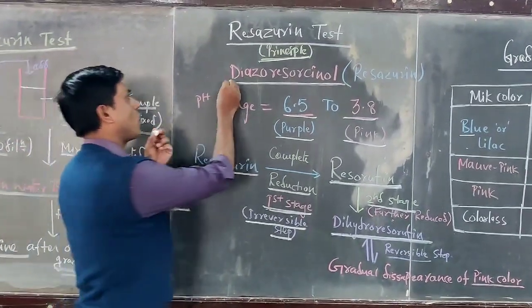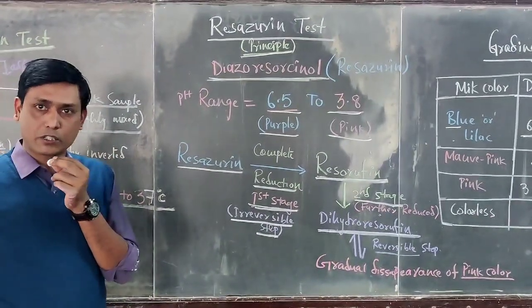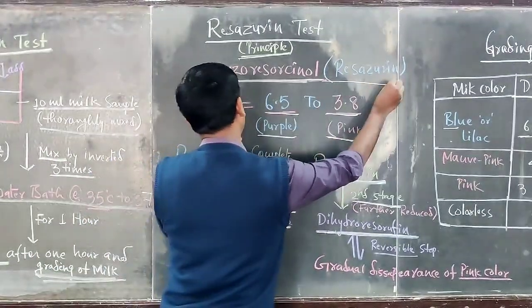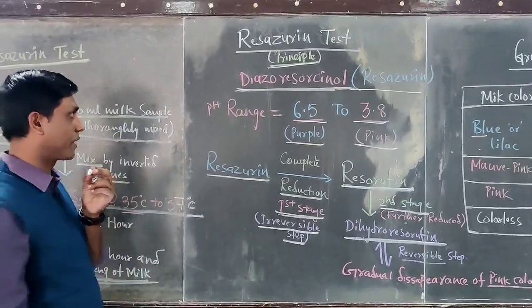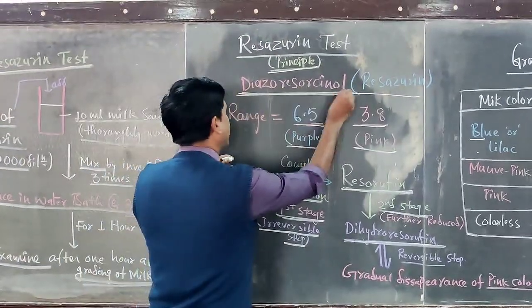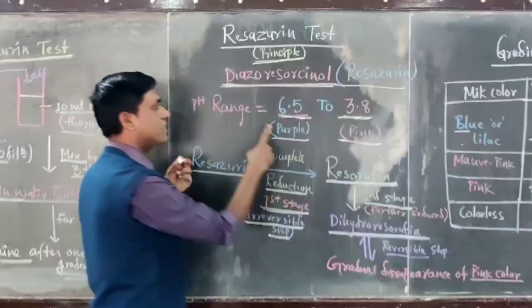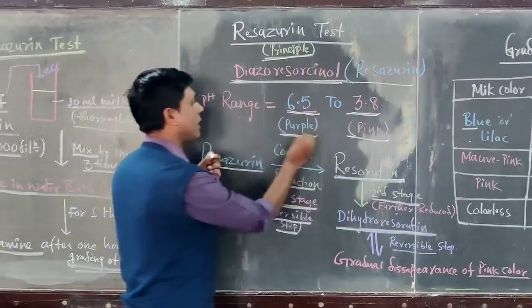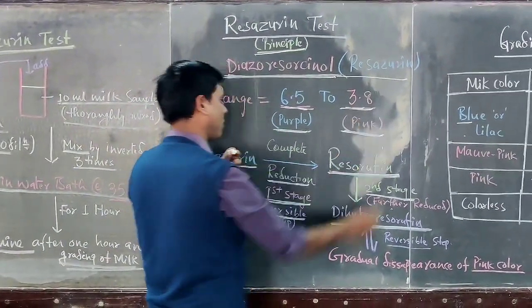Resazurin test is also called diazoresorcinol test because diazoresorcinol is a dye containing resazurin. This diazoresorcinol dye has a pH range of 6.5 to 3.8. At pH 6.5 or above it gives purple color, and at pH 3.8 or below it gives pink color.